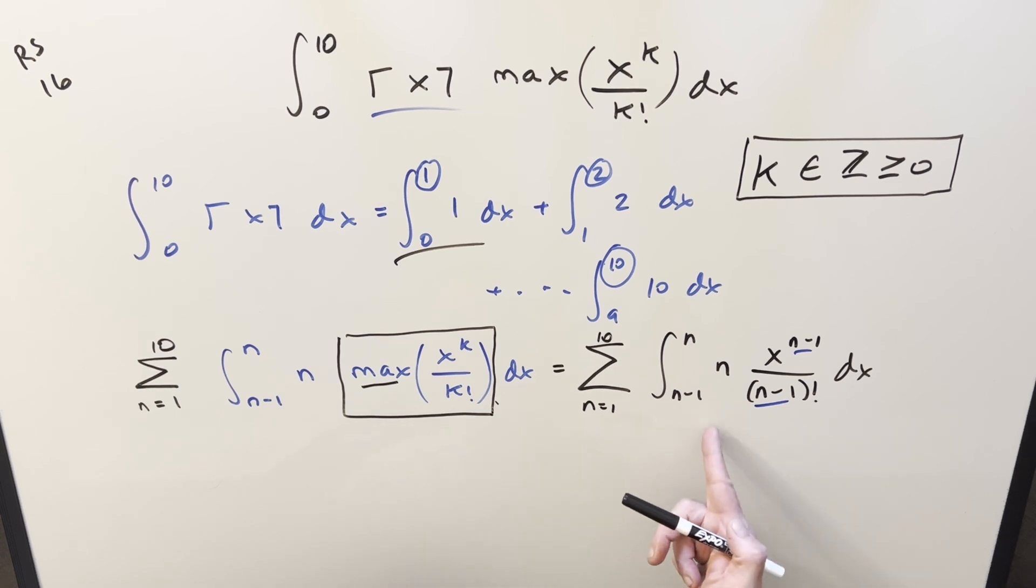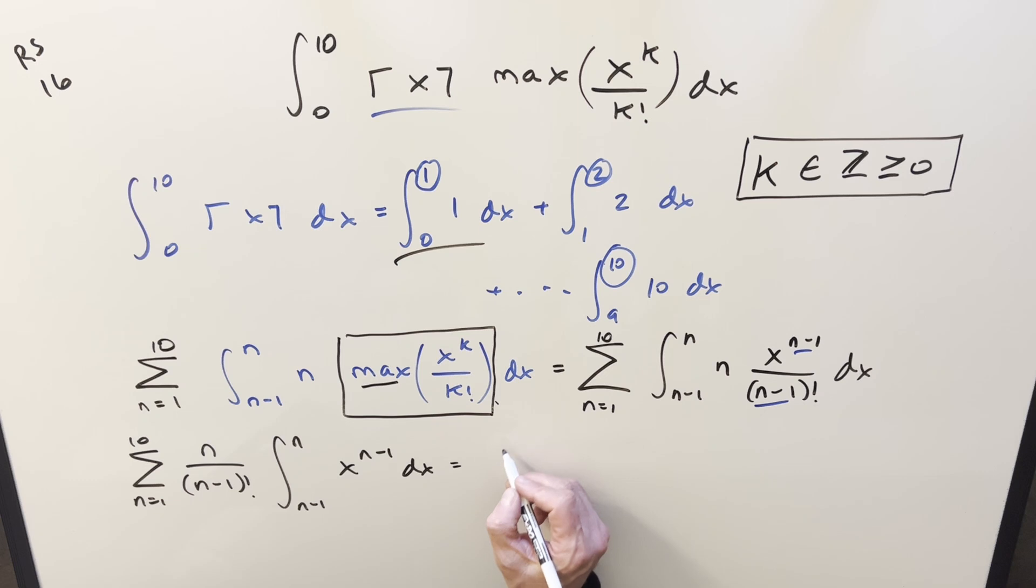But then from here, within the integral, all the n stuff is just a constant. So I can bring that outside of the integral, still within the sum. But now here we can just go ahead and integrate this using power rule.